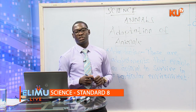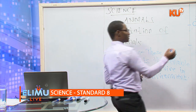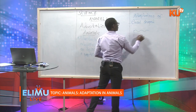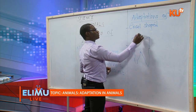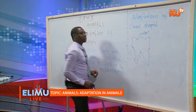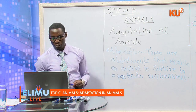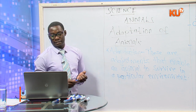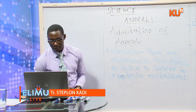Herbivores also have premolars and molars that have cusps and ridges. The cusps and ridges fit into each other very well, and that fitting enables proper chewing of food. Their jaws slide in a circular manner, which enables food matter to be chewed properly as they keep on chewing.